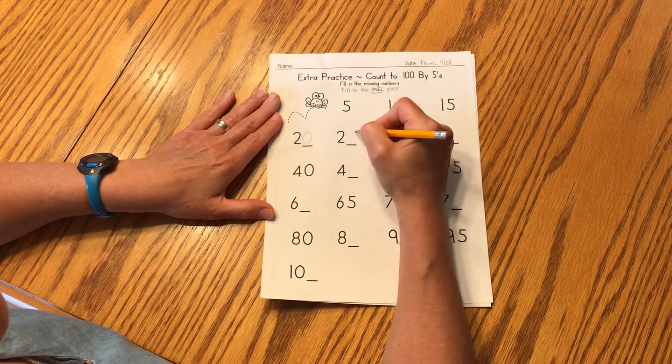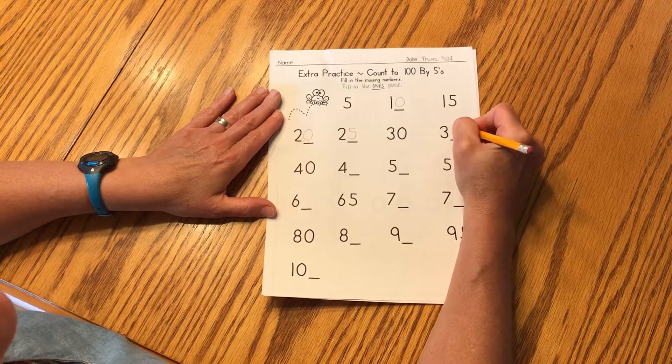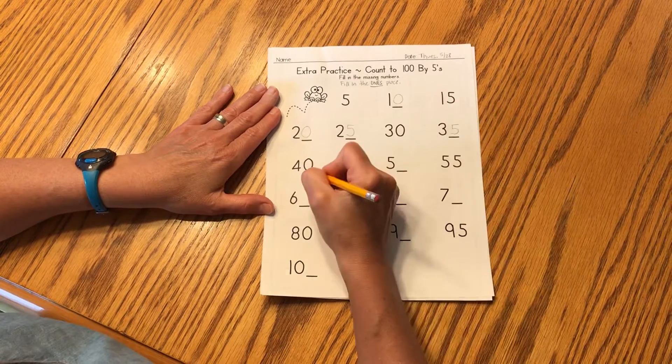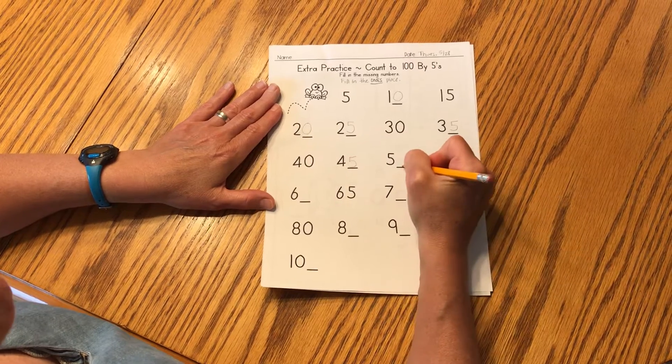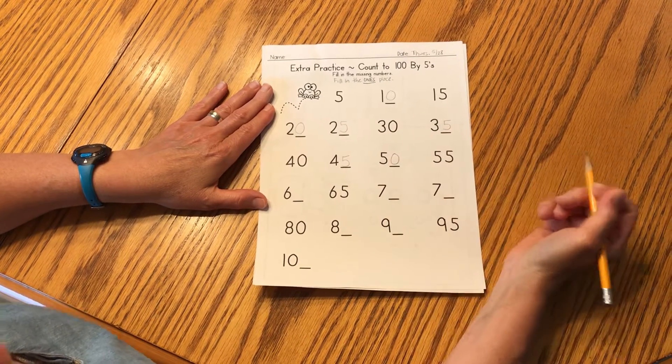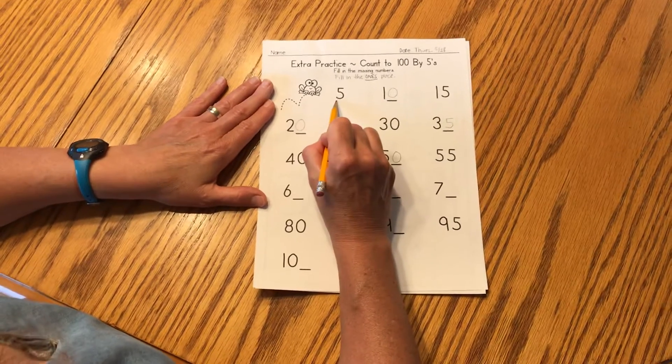After twenty comes twenty-five, thirty, thirty-five, forty, forty-five, fifty. Let's look at the pattern we have here with our ones place. So here's our ones place.